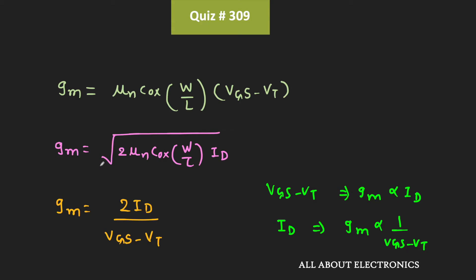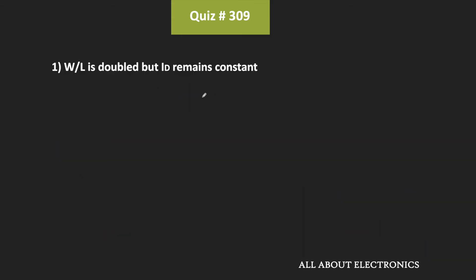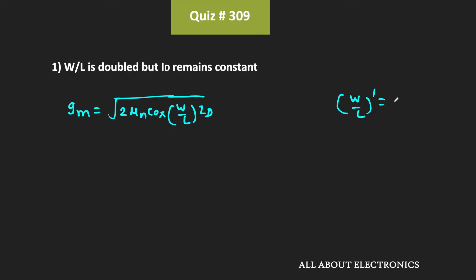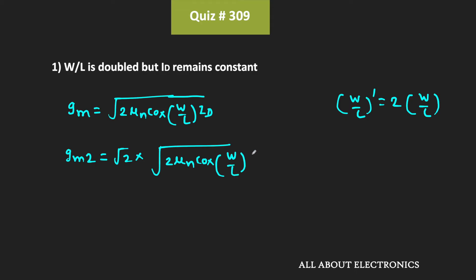Depending on the given parameters, we can use any of these three expressions. In the first case, the W/L ratio of the MOSFET is doubled while the drain current id is kept fixed. We use the expression: gm = sqrt(2 × μn × Cox × (W/L) × id). When W/L is doubled, the new W/L' = 2W/L. The new transconductance gm2 = sqrt(2 × μn × Cox × (2W/L) × id), which gives gm2 = √2 × gm = 1.414 × gm.